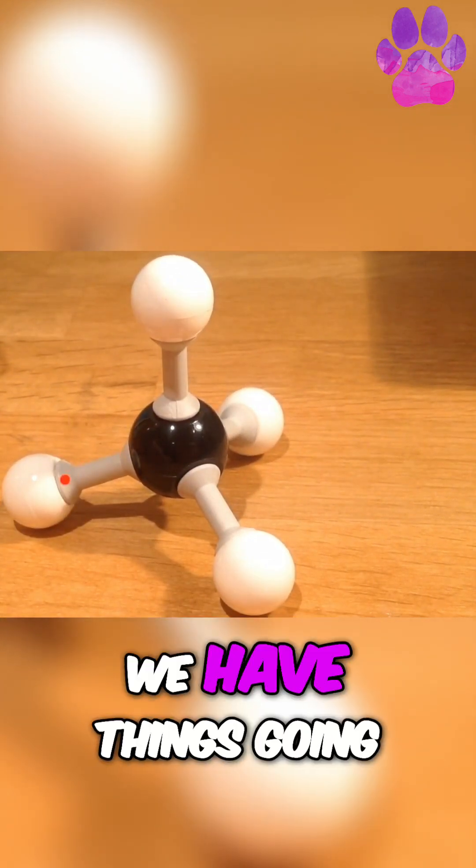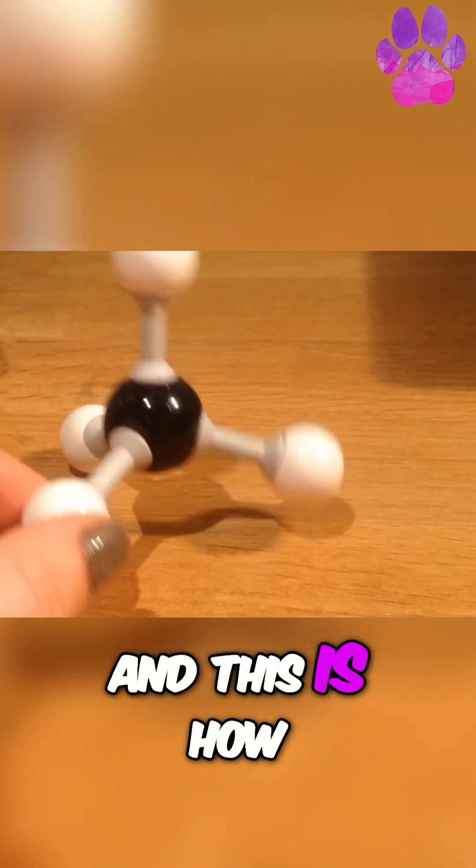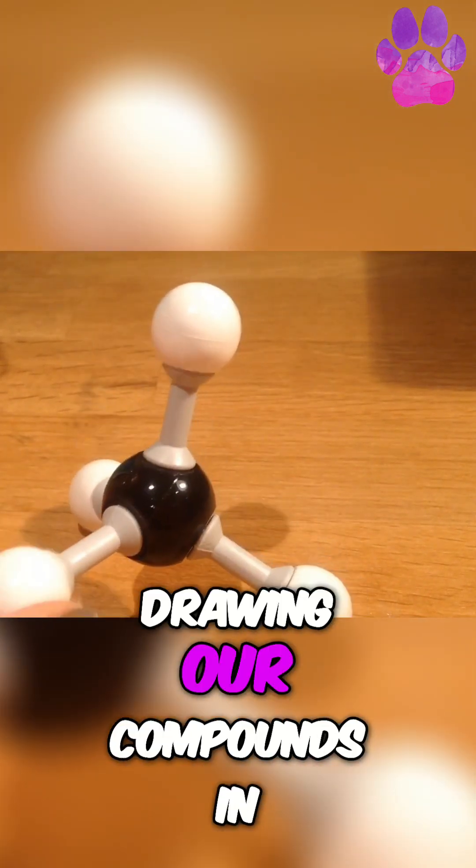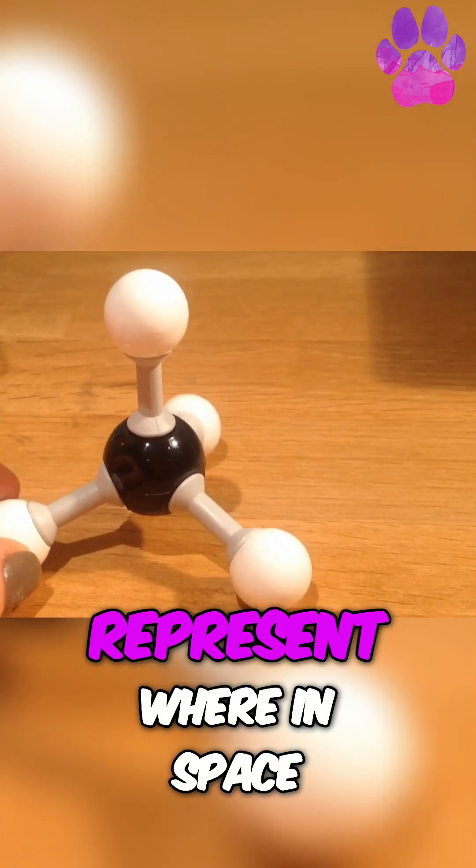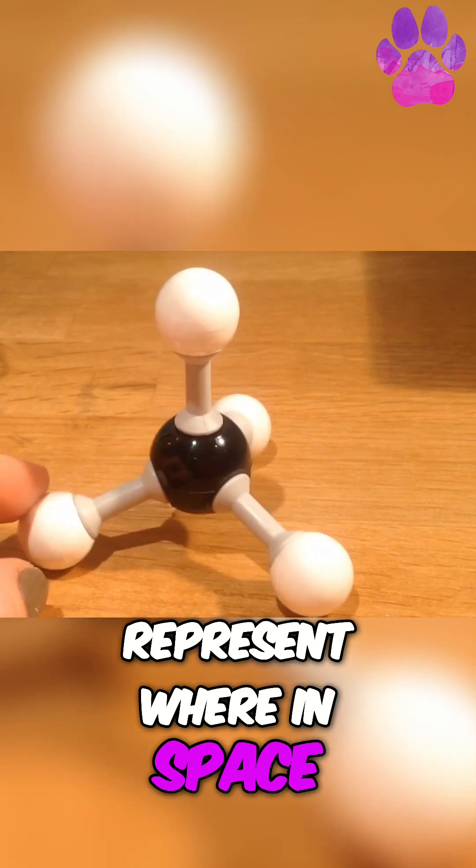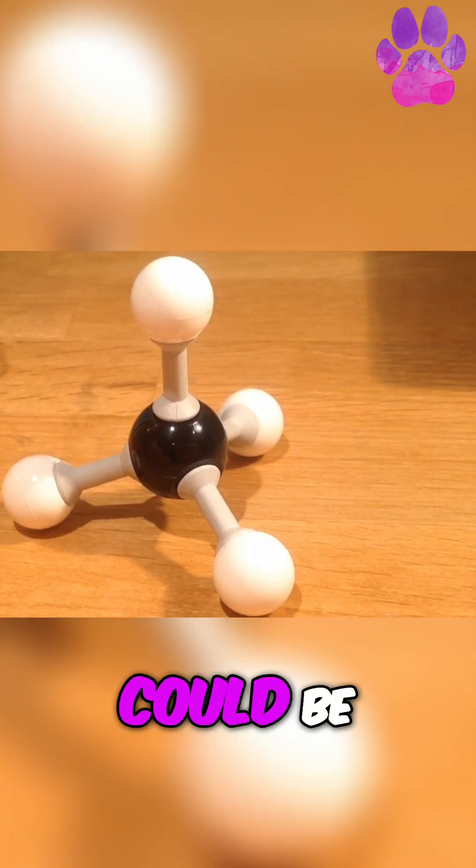We have things coming up, we have things going to the sides, we have things going back. And this is how we need to start drawing our compounds in organic chemistry from now on, so we can accurately represent where in space the other elements are and how the interactions could be.